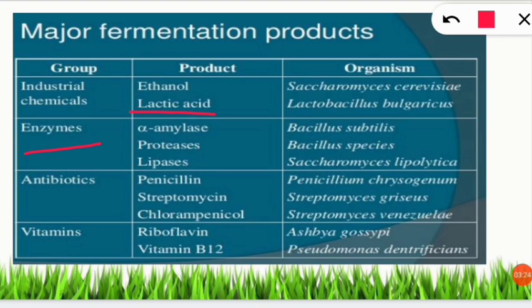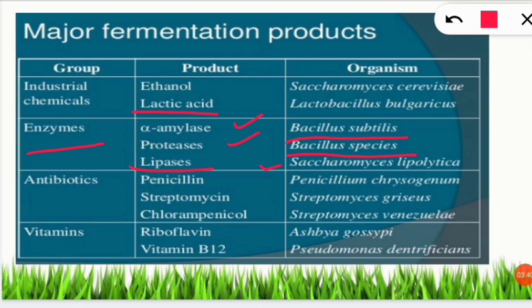Enzymes are very important fermentation products. Alpha amylase is produced from Bacillus subtilis; proteases are produced by Bacillus species; and lipase is a product of Saccharomyces lipolytica.